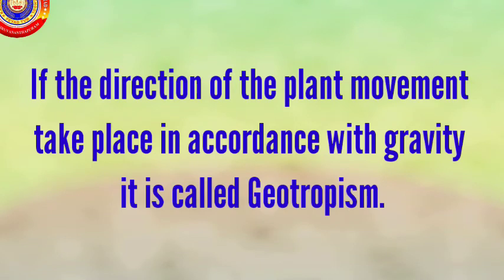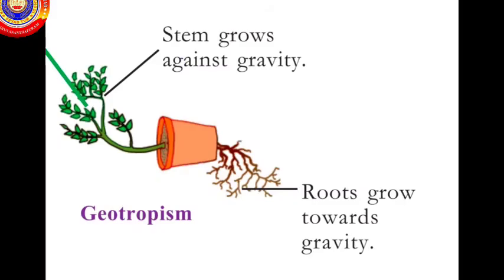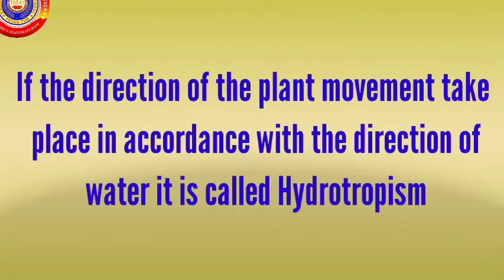The second one is geotropism. If the direction of the plant movement takes place in accordance with gravity, it is called geotropism. Here, the stem grows against gravity and the root grows towards gravity.